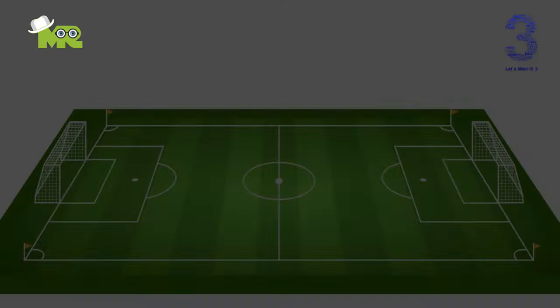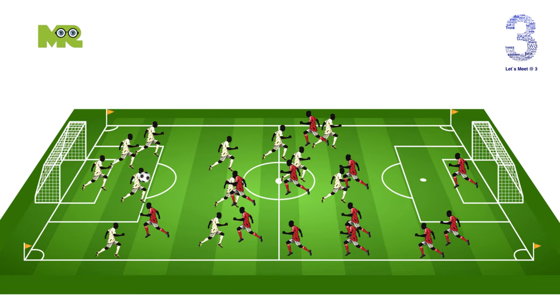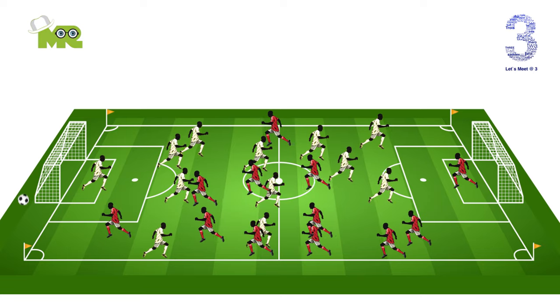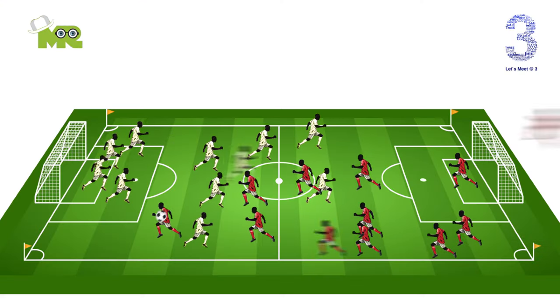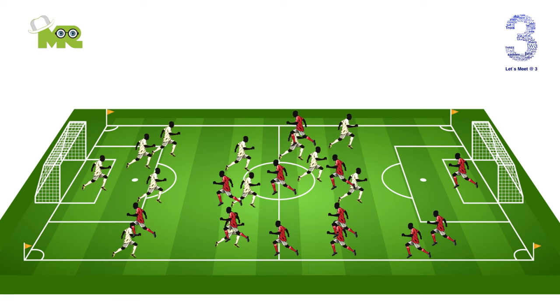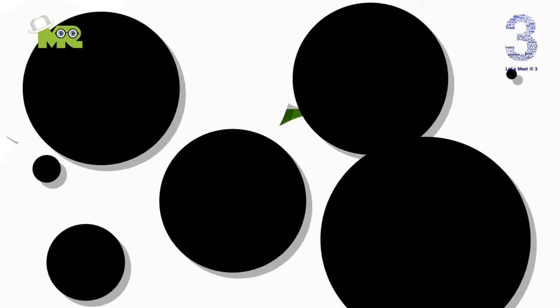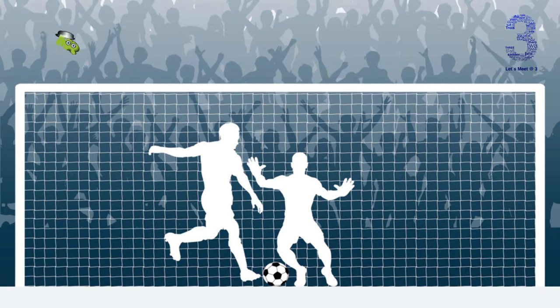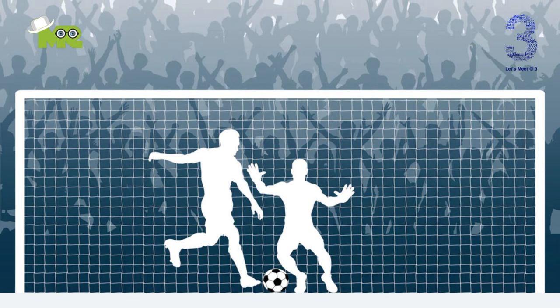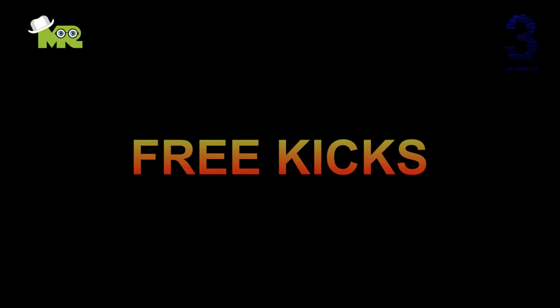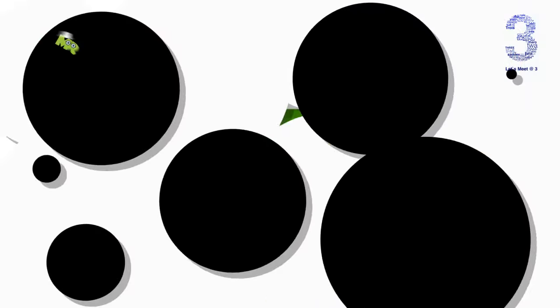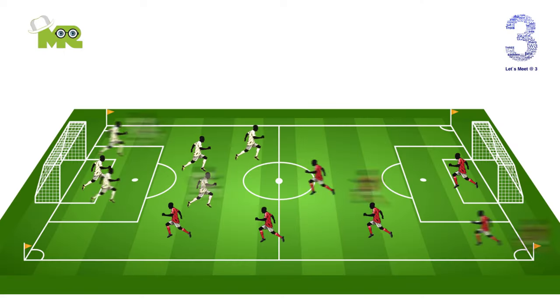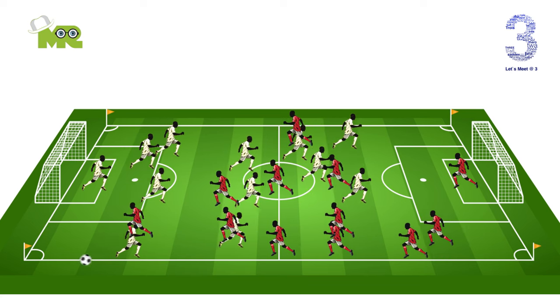When the defending team last touches the ball and it crosses the goal line without scoring a goal, the opposing team gets to kick the ball from the corner of the field. When the offensive team last touches the ball before it crosses the goal line, the goalie gets to kick the ball from the goal box. When a foul occurs in the penalty area, the fouled team is awarded a penalty kick. Free kicks or penalty kicks may be awarded to the opposing soccer team. Out of bounds occurs when the ball completely crosses over the boundary line.